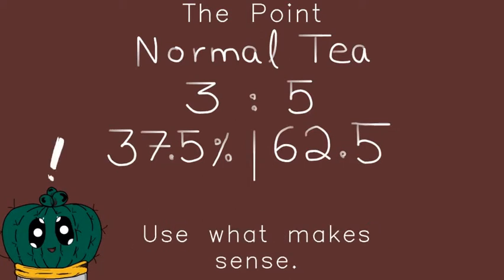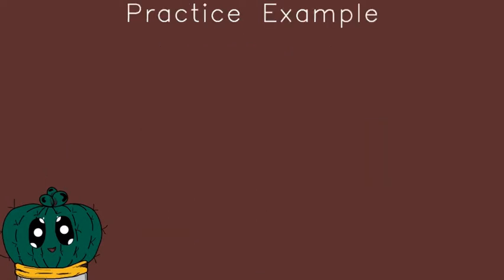Use whatever makes sense to you. If you were trying to make a liter of tea, then 3 to 5 isn't going to make a whole lot of sense. The percentages make more sense: 37.5% milk is added and 62.5% water is added. That's why we convert ratios into percentages.